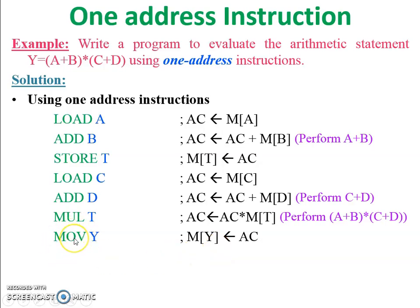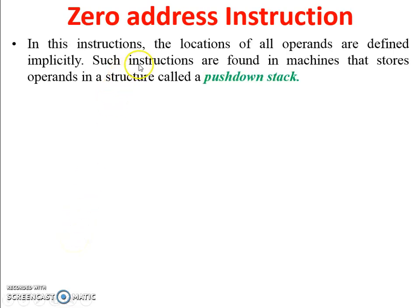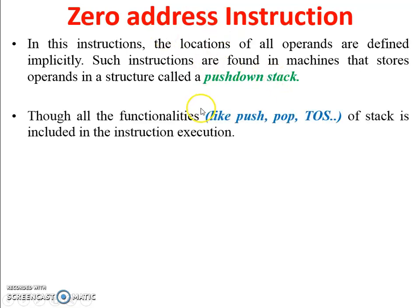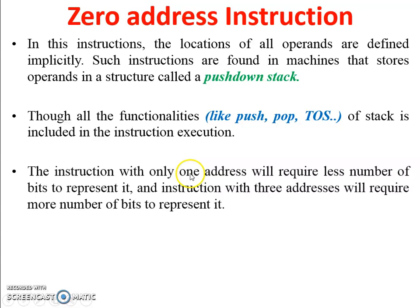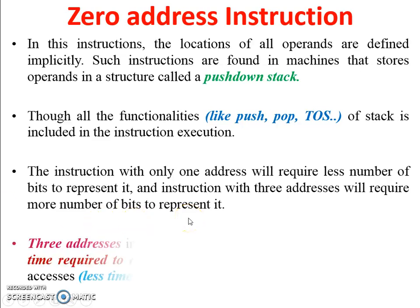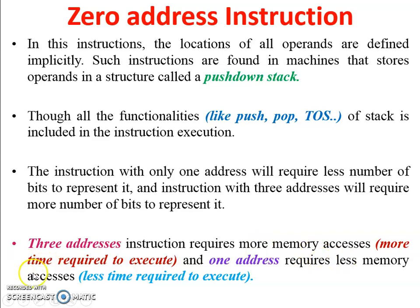Zero address instruction: in this instruction the location of all operands are defined implicitly — there is no source or destination address explicitly available. These instructions are found in machines that store operands in a structure called a push-down stack. Comparisons: instruction with only one address requires fewer bits to represent, while three address instructions require more bits. Three address instructions also require more memory access and more time to execute, while one address instructions require less memory access and less time.